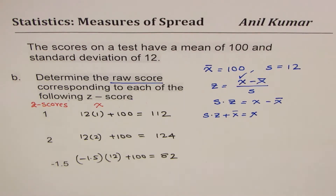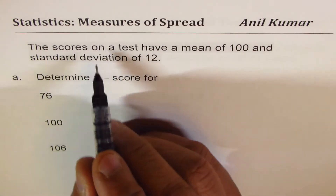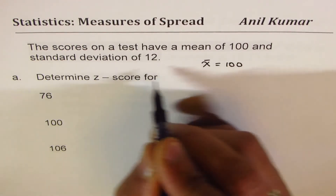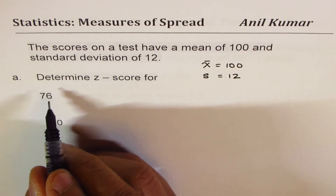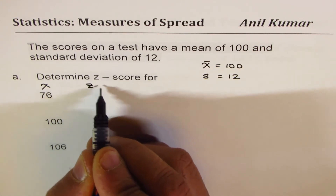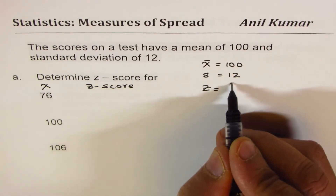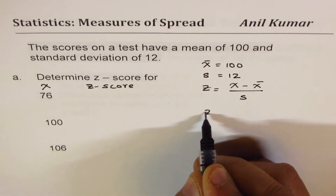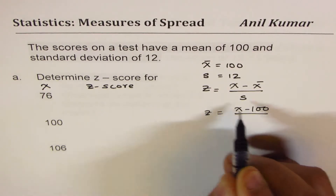Now let's do Part A. In Part A, the same values apply: mean is given as 100, standard deviation is given as 12. These are the raw scores X, and we'll calculate Z-score. The formula is Z-score equals X minus mean over standard deviation. In our case, since mean is 100, it will be X minus 100 over 12.